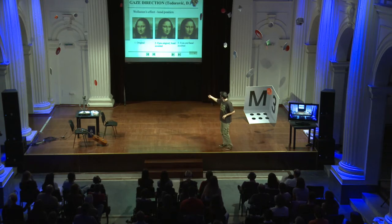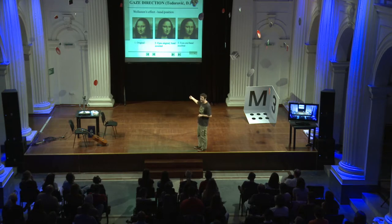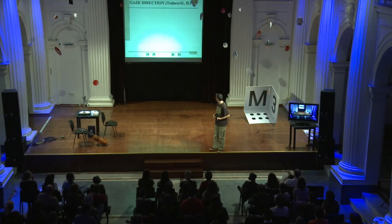Why is she looking at you? Because we perceive the gaze direction based on the position of the pupils and the position of the head. When the pupils remain in the same place but I change the position of the head, there goes the gaze. But when I change the position of the head but also change the position of the pupils, she's looking again at you. It's called the Wollaston effect.